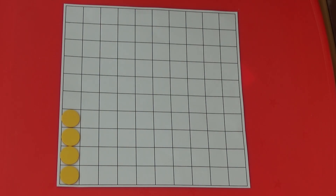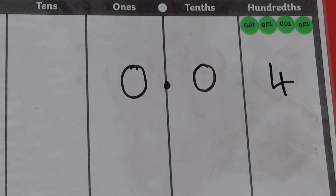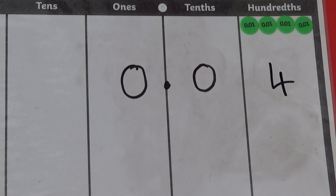we are showing four hundredths, or zero point zero four. We can also show this on a place value grid by putting four hundredths or zero point zero four counters in the hundredths column.